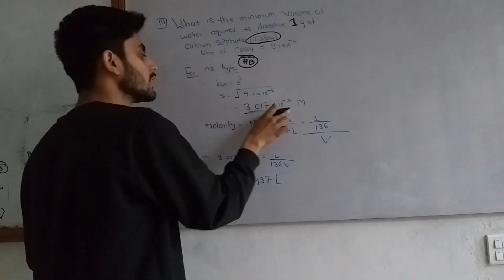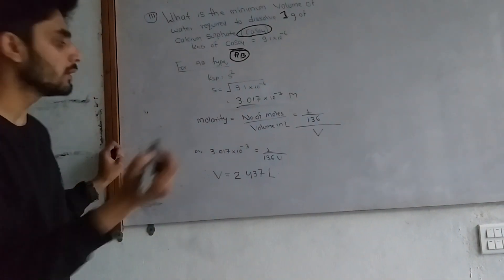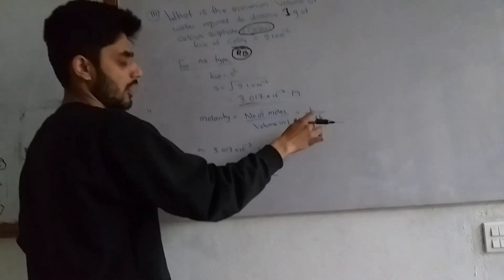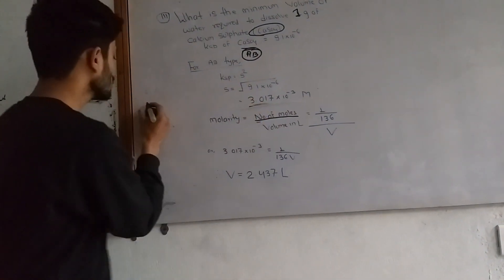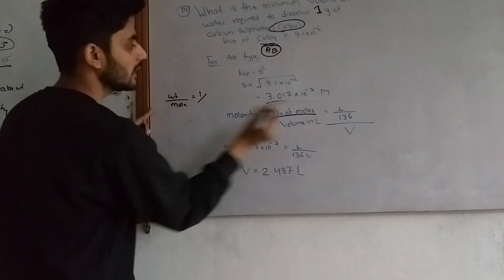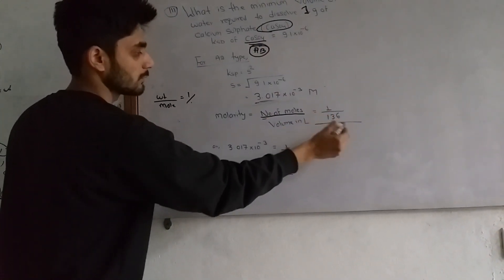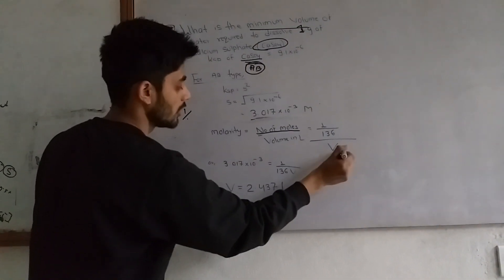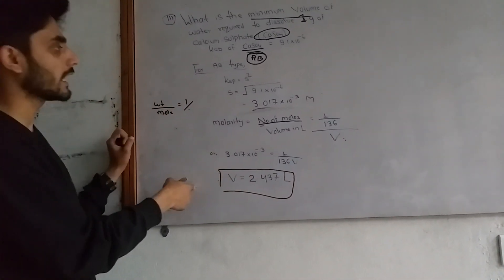Solubility is moles per liter, which equals weight divided by molecular weight divided by volume in liters. We have 1 gram and the molecular weight of CaSO4 is 136. Dividing by volume in liters gives the minimum volume.